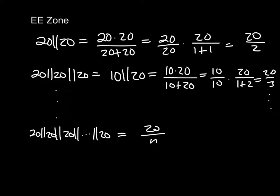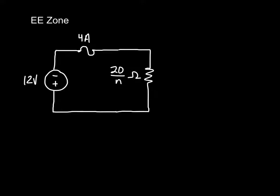So we're going to use that information to redraw the circuit. Here you can see that the circuit has been redrawn. I've replaced the 20 ohm parallel resistors, N of them, with 20 over N ohms. Now this is going to make this problem much easier to solve. N is the number of resistors that we can have parallel on this circuit without blowing that 4 amp fuse.